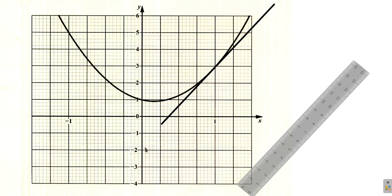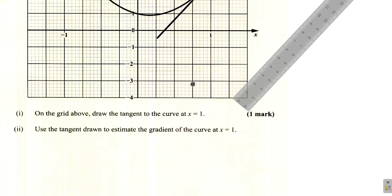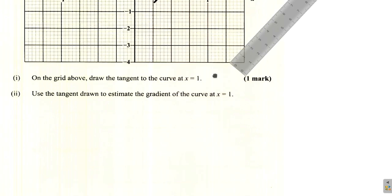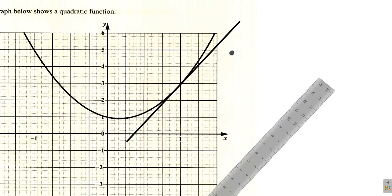I'm going to have to draw for a bit. That's what they want us to do. Then, they say, use the tangent drawn to estimate the gradient of the curve at x equals 1. That means, you're going to want us to get the gradient. Just the gradient.